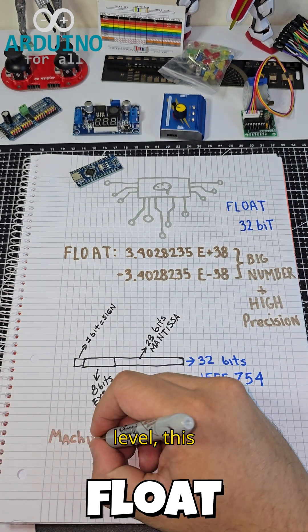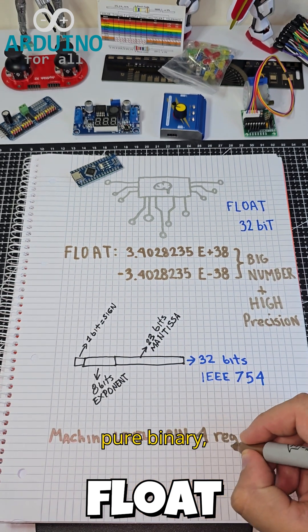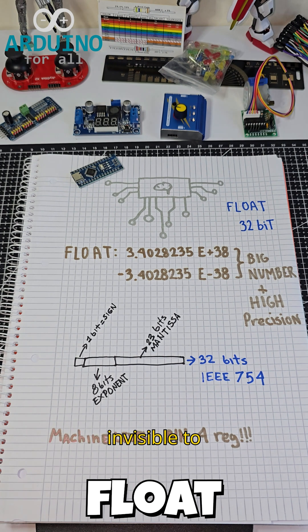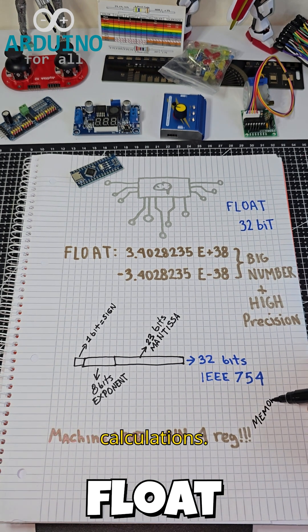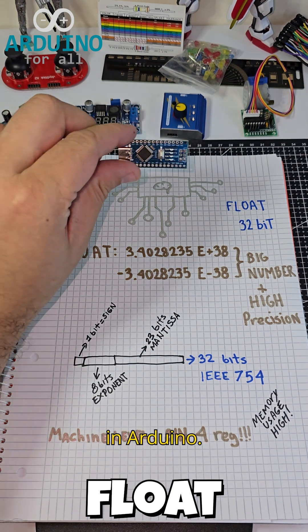At the machine level, this value is stored across four memory registers, in pure binary, invisible to us, but essential for calculations. That's how floats store complex values so efficiently in Arduino.